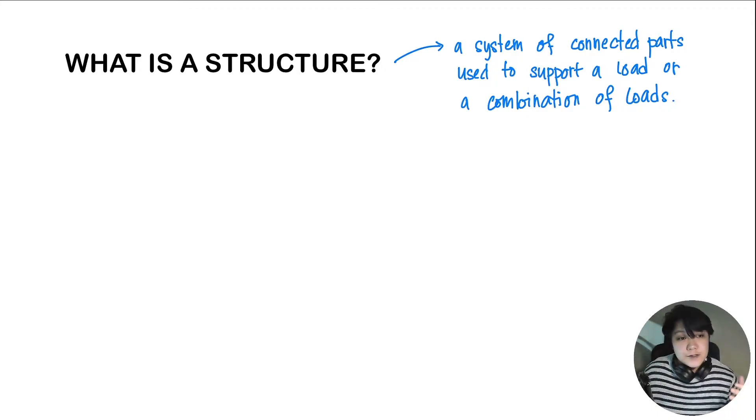Now, a lot of things could be considered as a structure. For example, we have our Skeleton System. Our Skeleton System comprises of different connected parts. We could also consider our bicycles as a structure, our vehicles, our cars. Anything that is made out of connected parts or different members that are connected to each other that are carrying a load could be considered as a structure.